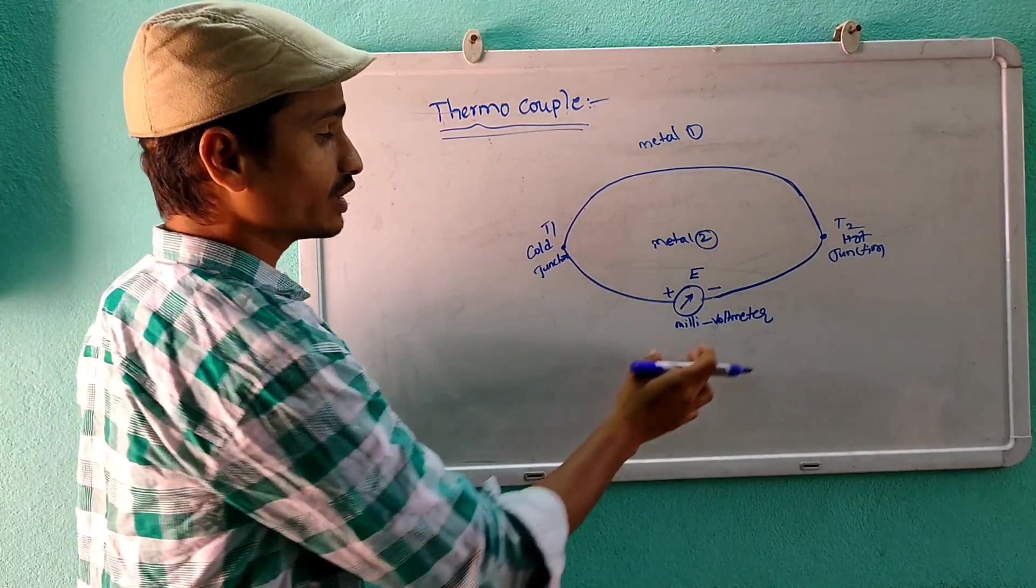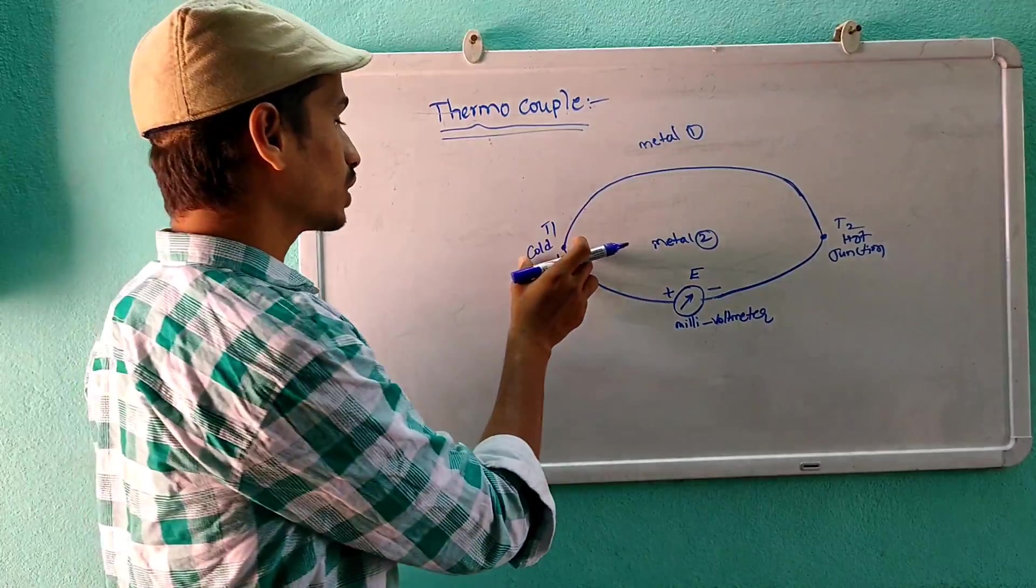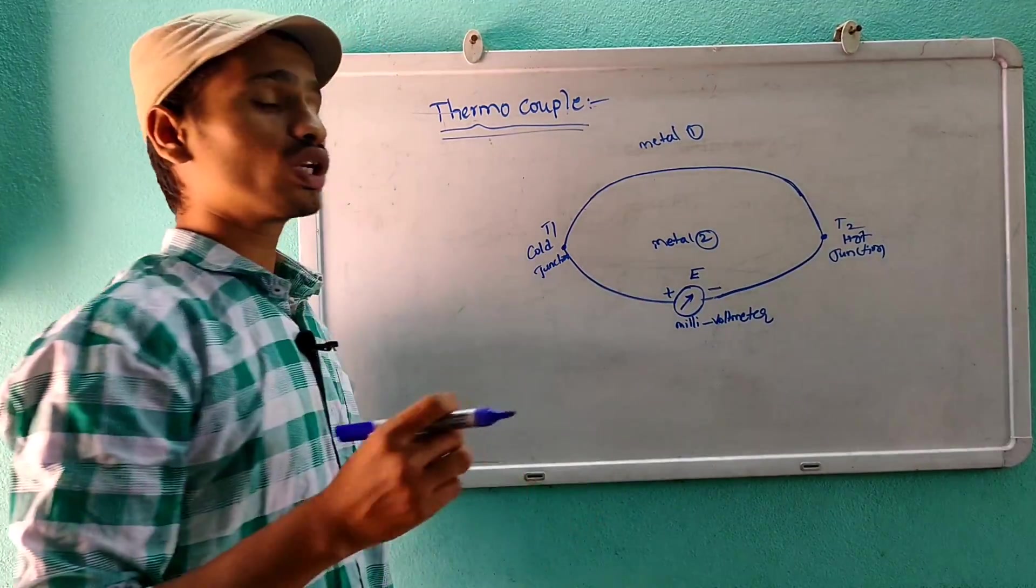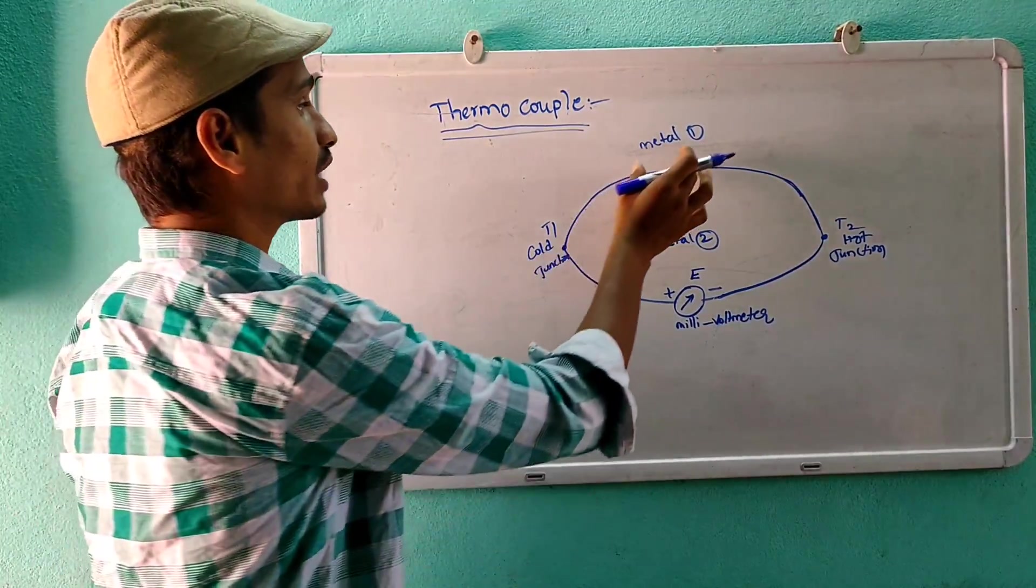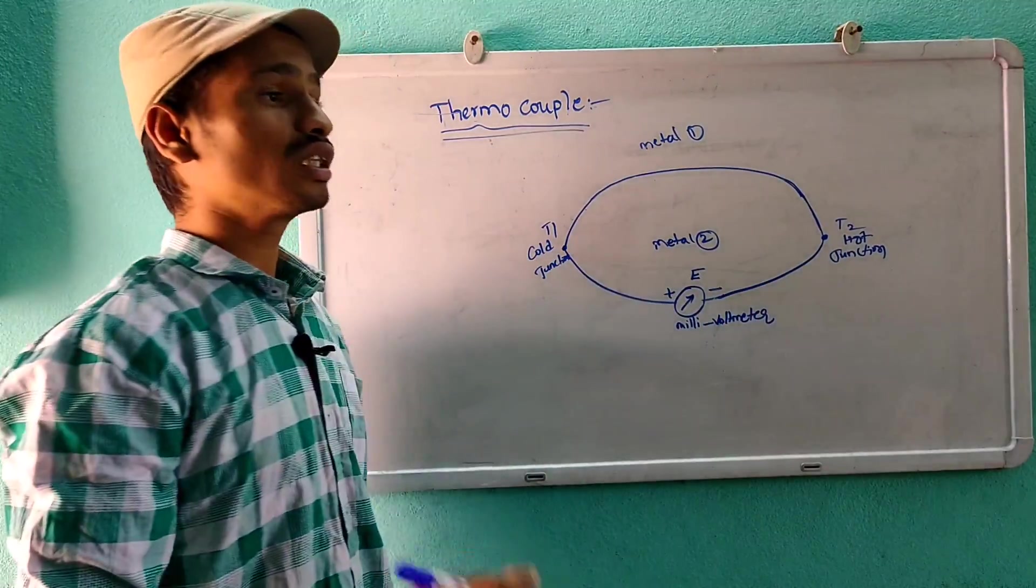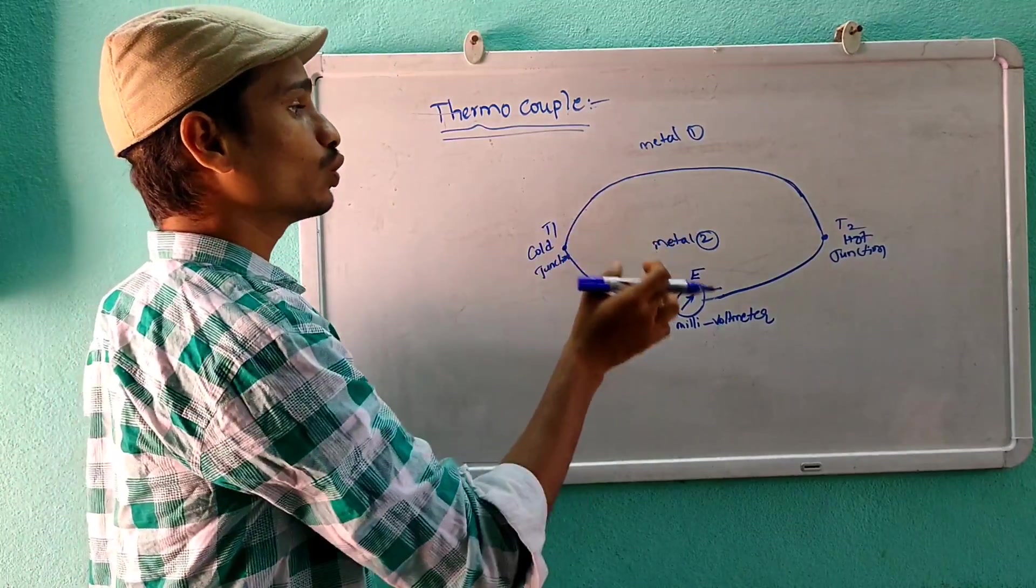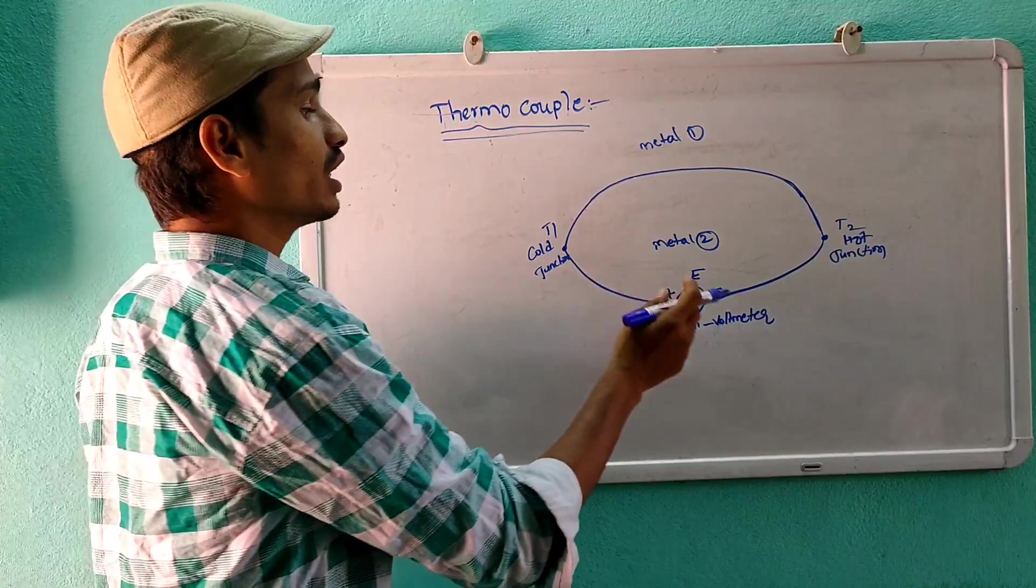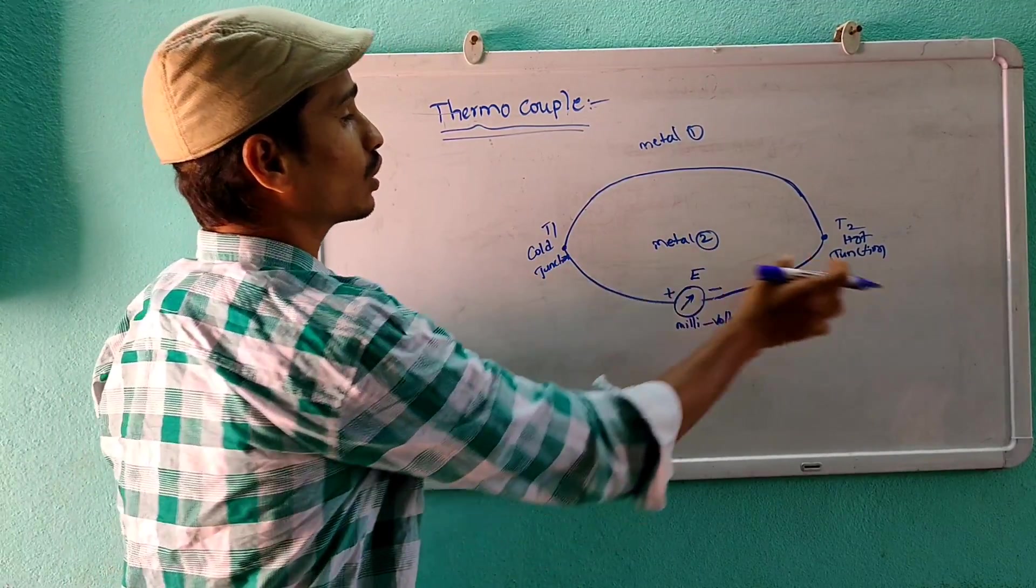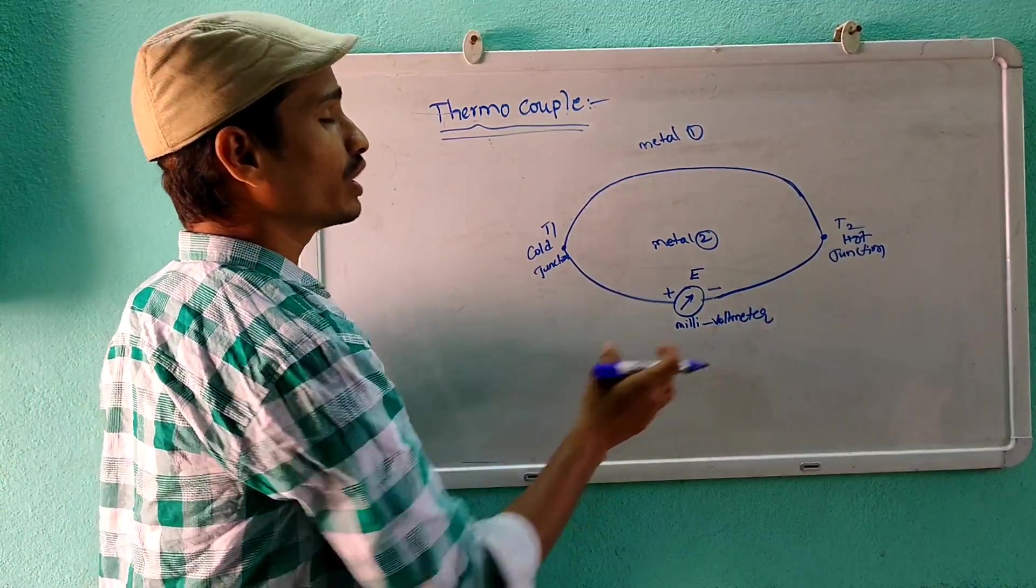Between the junctions we have placed a millivolt meter. We are using a millivolt meter because when we apply temperature and there is variation of temperature in hot junction and cold junction, the temperature variations produce current flow in the millivolt meter or EMF. For example, metal one is copper material and metal two is aluminum or iron material. If we heat or cool the junction, we can indicate this in the millivolt meter as EMF.